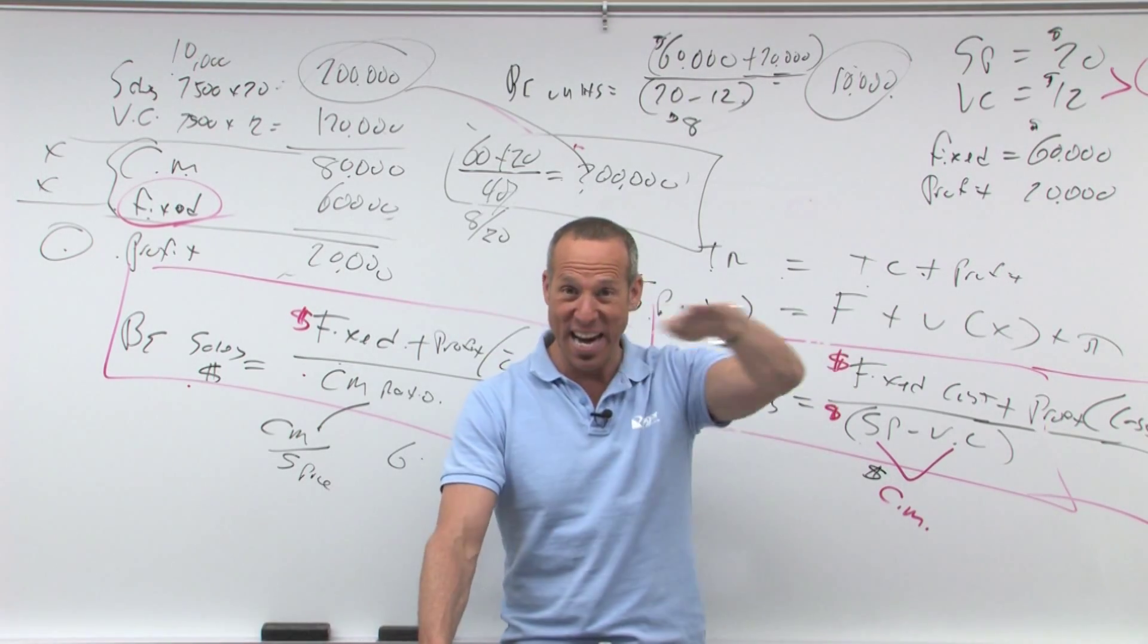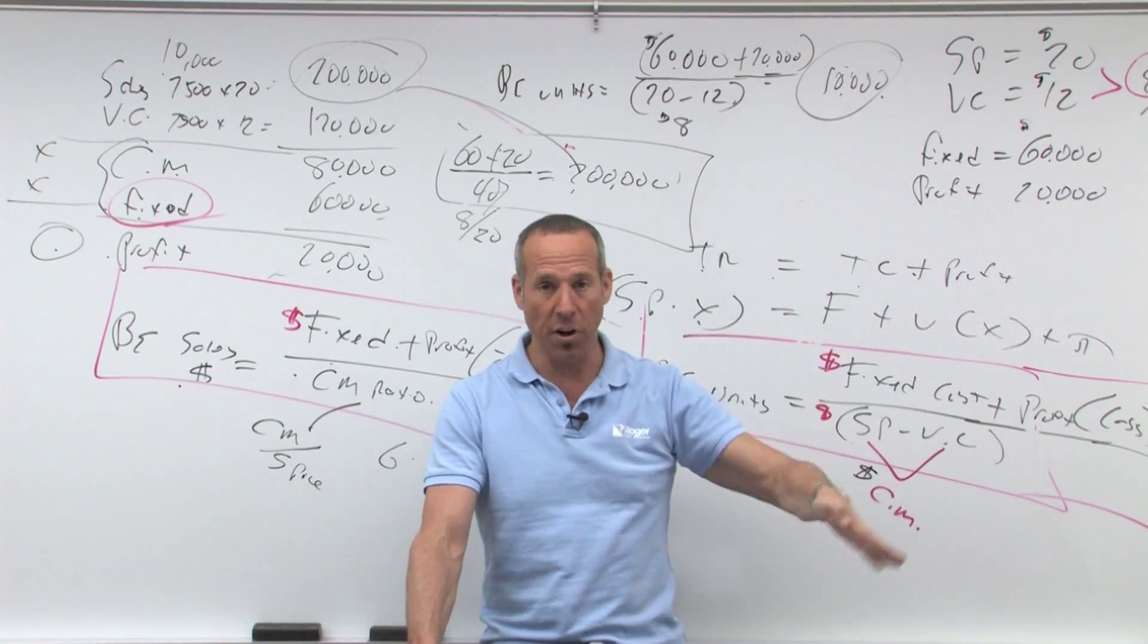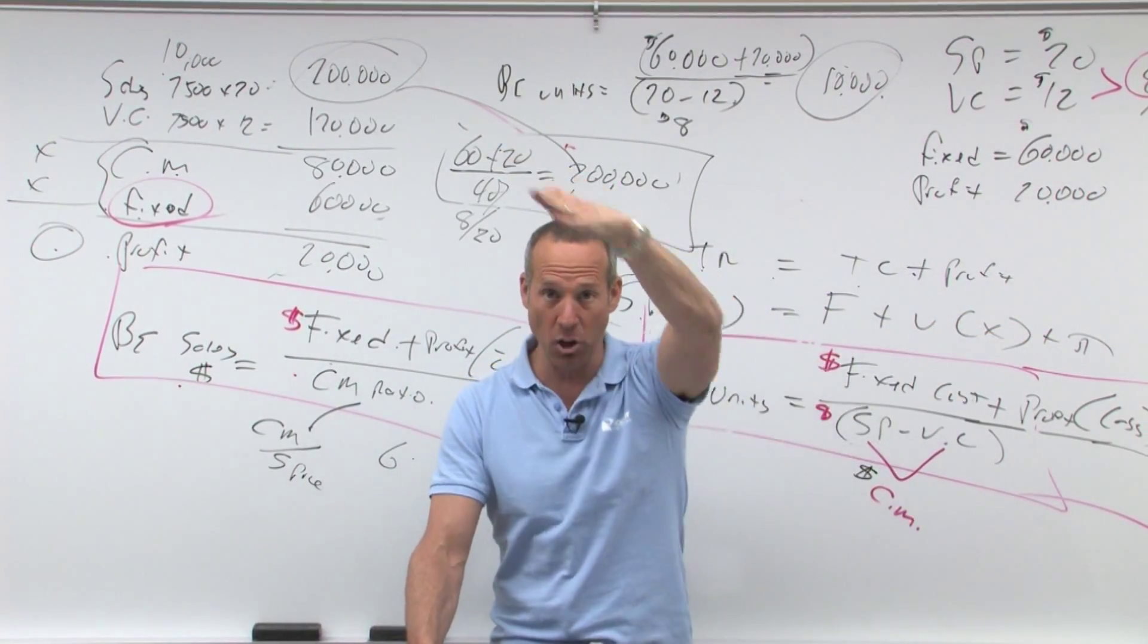In other words, fixed costs are a line, linear is a line, they're going straight out, fixed. Variable costs are pretty much a line at an angle, but a slope.